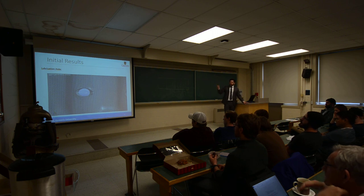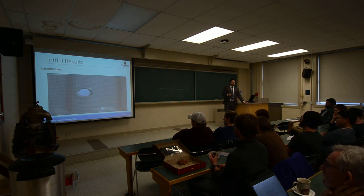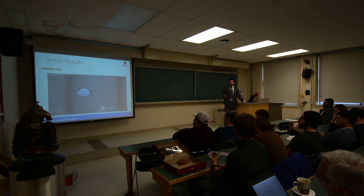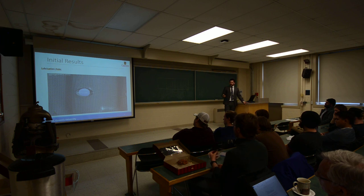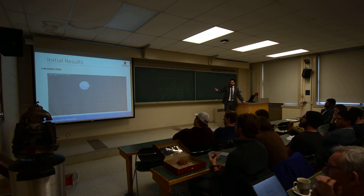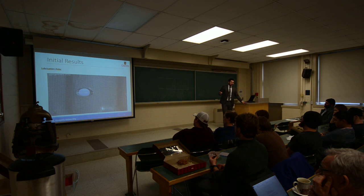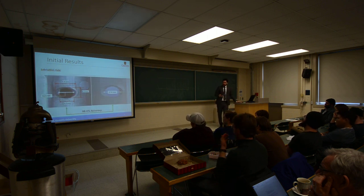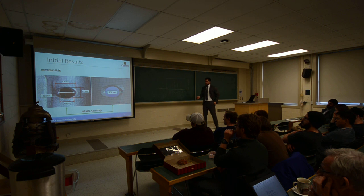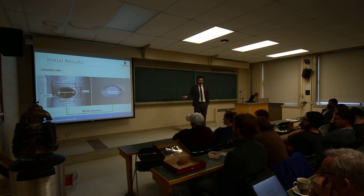We can also validate the model by looking at how the lubrication holes deform. Because the material becomes very strong after quenching, all piercing and trimming operations must be done before the heat treatment stage. So all holes are punched before the splines are formed. When this happens, we get some ovalization behavior on the lubrication holes, which gives us another validation metric. The experimental result shows an average major diameter of about 4.2 mm for these holes, and our simulation gives 4.14 mm — very close agreement.